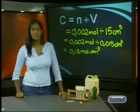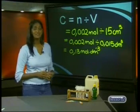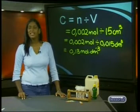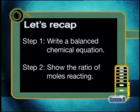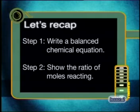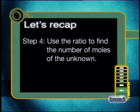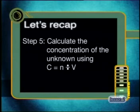The concentration of the hydrochloric acid is 0.13 mol·dm⁻³. Let's quickly recap the steps for a titration problem. Step 1: Write a balanced chemical equation. Step 2: Show the ratio of moles reacting. Step 3: Apply N equals C multiplied by V to find the number of moles present. Step 4: Use the ratio to find the number of moles of the unknown. Step 5: Calculate the concentration of the unknown using C equals N divided by V.